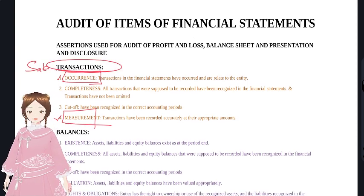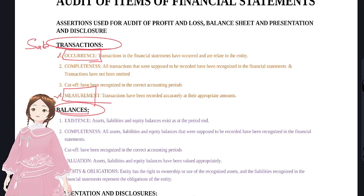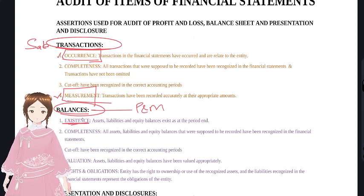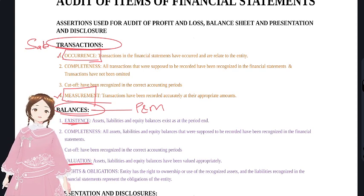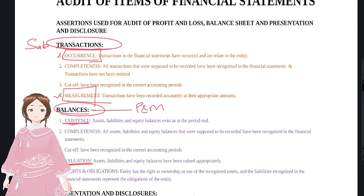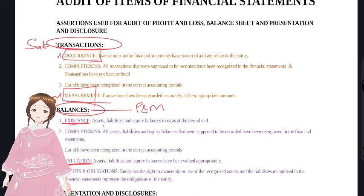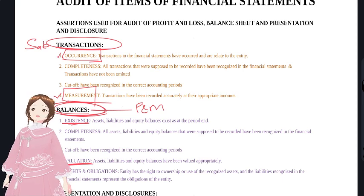For balances - think of plant and machinery - the assertion is existence: whether the plant and machinery had existed or not. The second assertion for balances is valuation, not measurement, because a balance is recalculated every year whereas measurement is done only once at the time of a sale or purchase transaction.